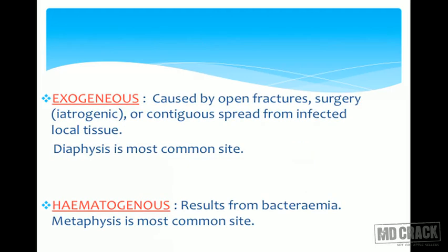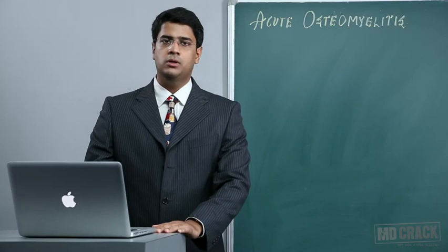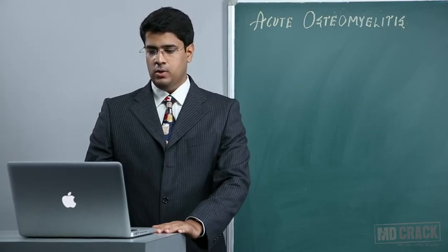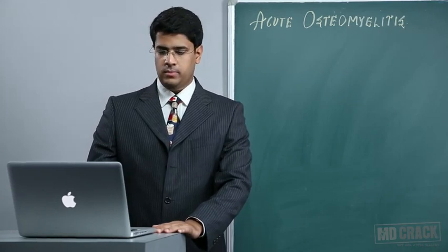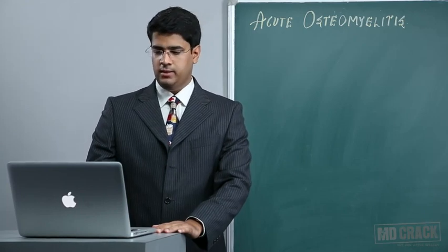Exogenous osteomyelitis is caused commonly by open fractures, but can also be iatrogenic through surgery or by continuous spread from infected local tissues. The commonest site is the diaphysis — the middle part of the bone. Hematogenous osteomyelitis results from bacteremia, where bacteria spread through the blood. The metaphysis is the commonest site — this can also be an MCQ question: the most common site of bone affected in the hematogenous route.